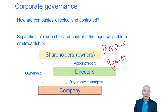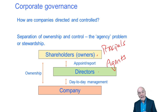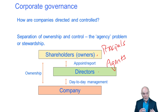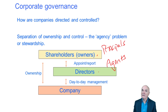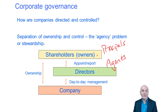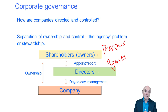Directors should run the company in the best interest of the shareholders. The trouble is if the shareholders are not in the company every day — may never visit the company — and the directors are there every day, how do the shareholders know that the directors are actually running the company for the shareholders' benefit and not the directors' benefit?